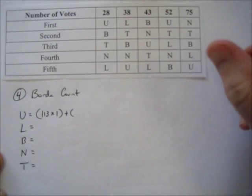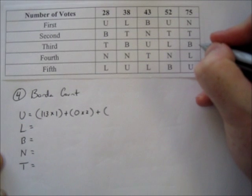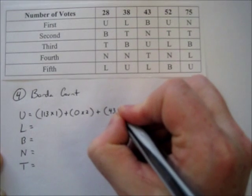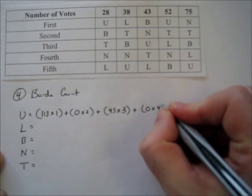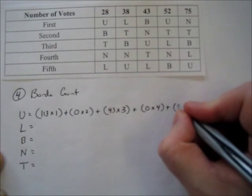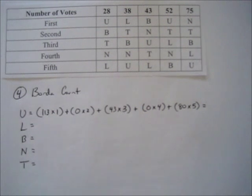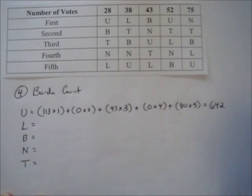Moving up: nobody put Usher in fourth place, worth two points each. In third place, 43 people ranked Usher there. In second place, nobody. In first place, 28 plus 52 equals 80 people, each worth five points. The point values increase by one: one, two, three, four, five. Calculating all of that gives Usher a total of 642 points.